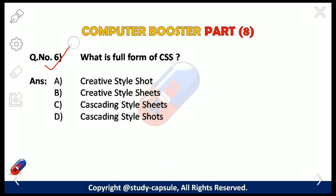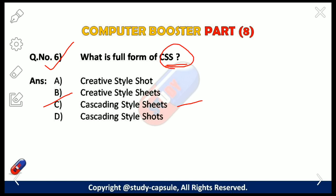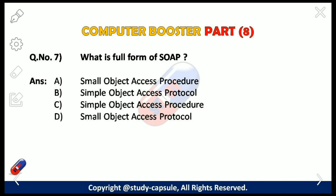Our sixth question: what is the full form of CSS? The answer is C — Cascading Style Sheet. Cascading Style Sheet is the language for describing the presentation of web pages, including colors, layout, and fonts. It allows one to adapt the presentation to different types of devices such as a large screen, small screen, or a printer.